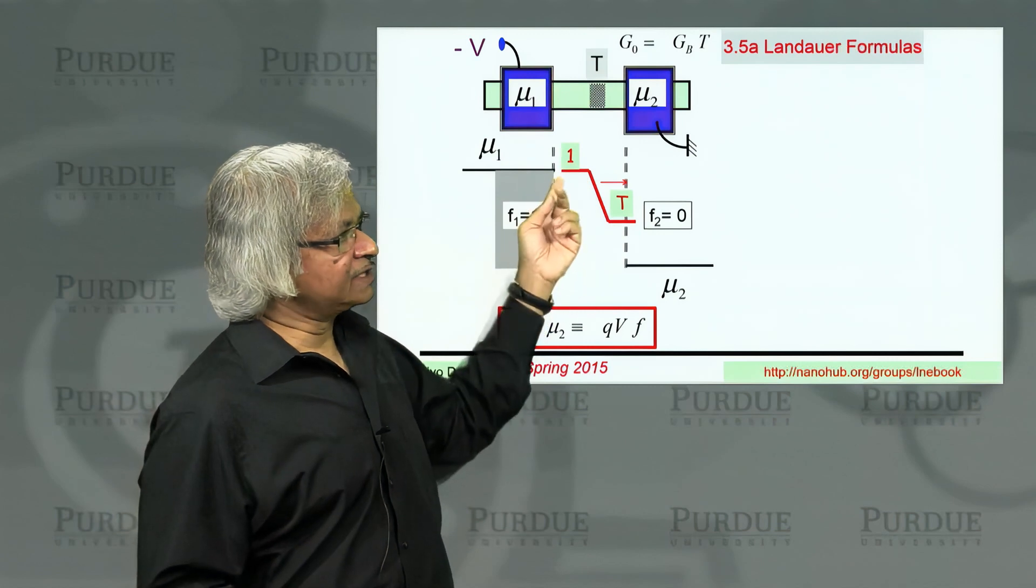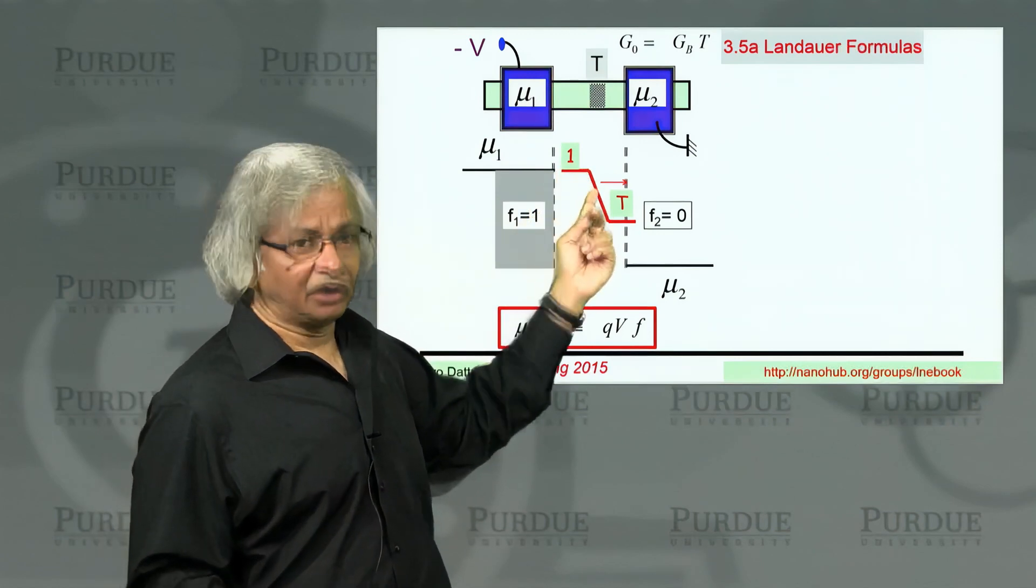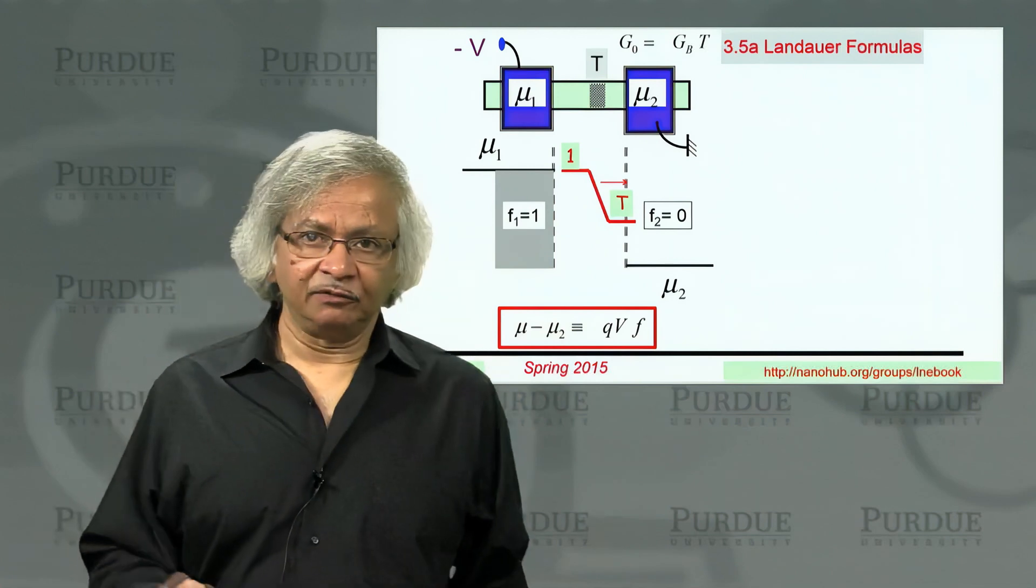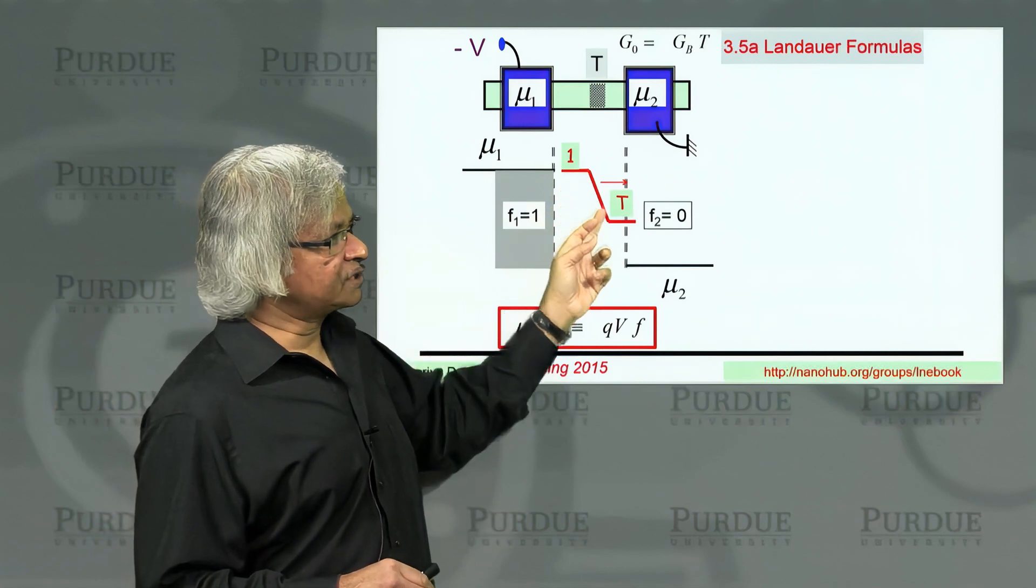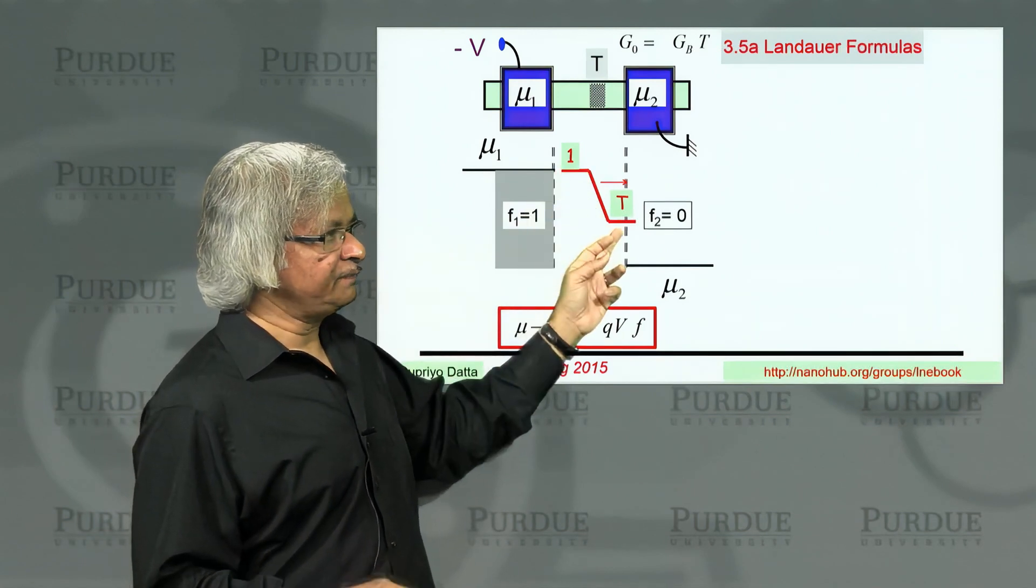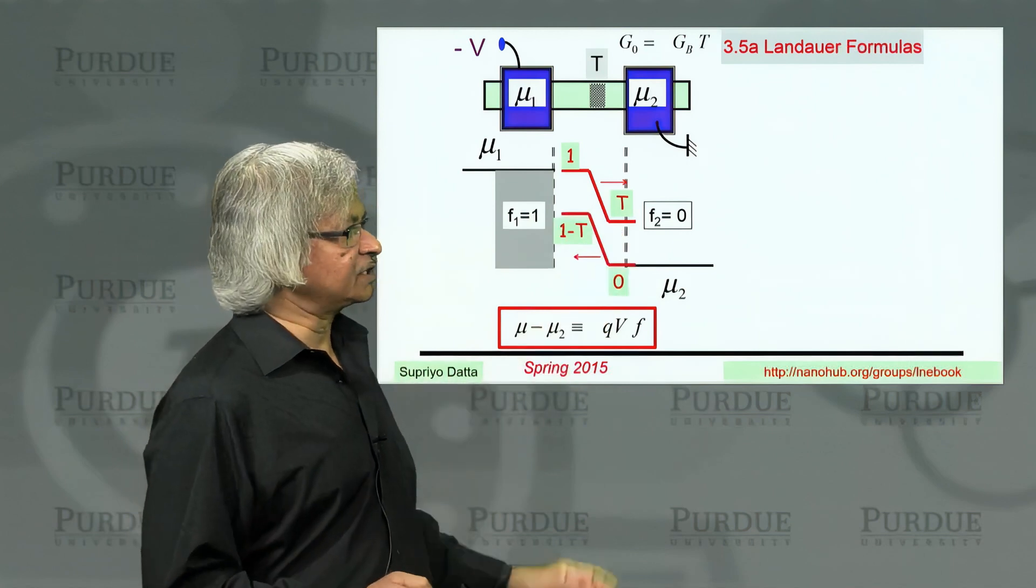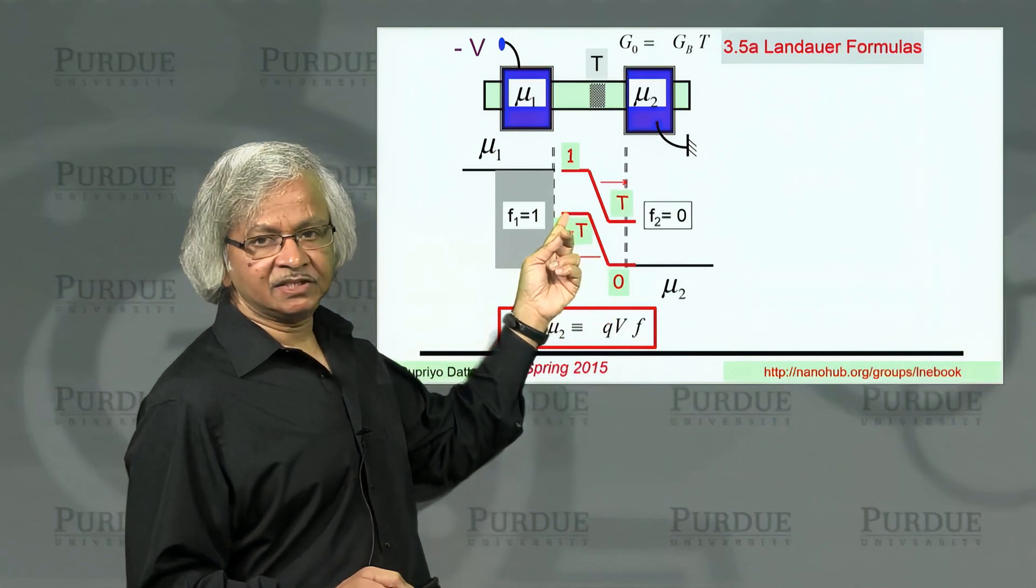What we want to talk about now is a localized scatterer whose transmission probability is T. What we'll argue is that when you look at the electrochemical potential or quasi Fermi level, you'll find the quasi Fermi level drops sharply across the scatterer from 1 to T, and the other quasi Fermi level steps up from 0 to 1 minus T.